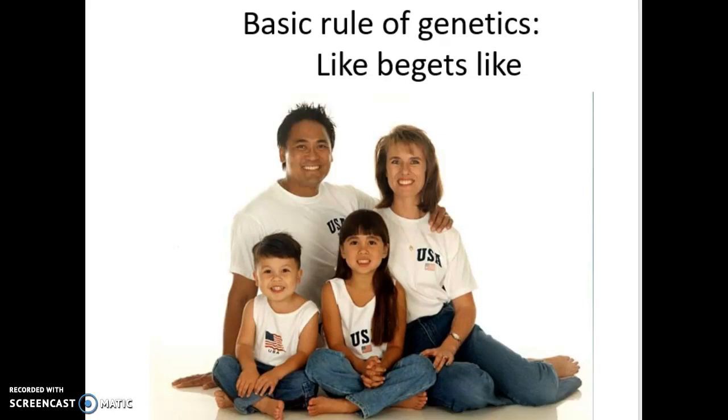So you look at this couple here, mom and dad, you look at their hair color, their eye color, their blood type. We would expect their kids to have inherited those traits, those variations. Similar hair color, similar eye color, probably same blood type. That is the basic rule of genetics.